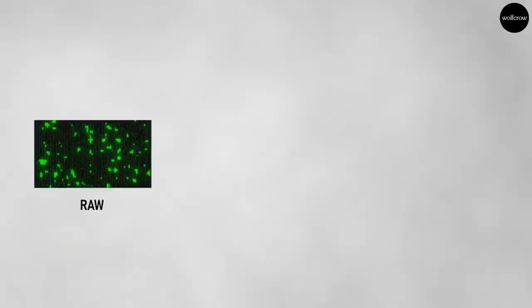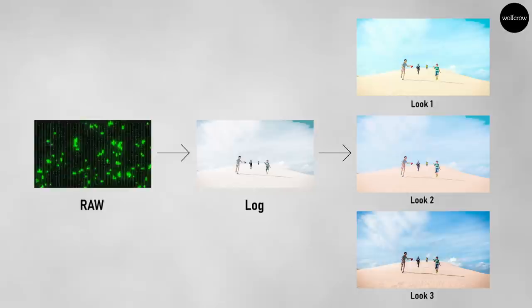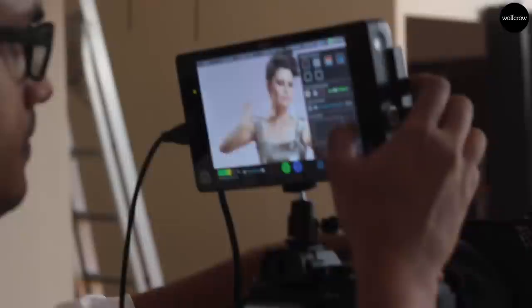This is why RAW and log are currently tied together. If you shoot RAW, you must start with a log encoding of that RAW to even see a usable image — later you can do whatever you want with it. Remember, the engineers made the camera knowing more about this than you do, so it would be prudent to follow their workflow.